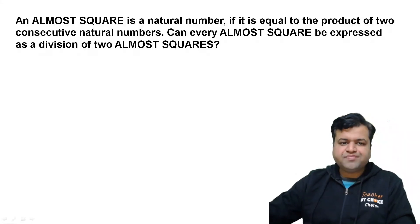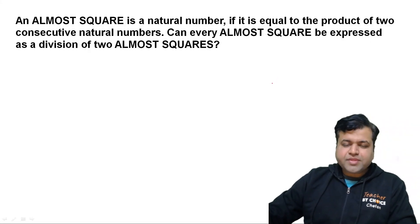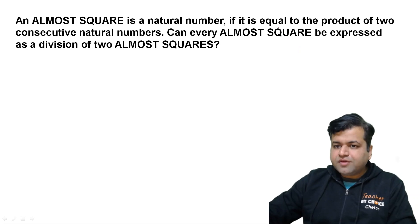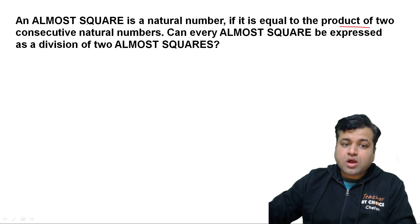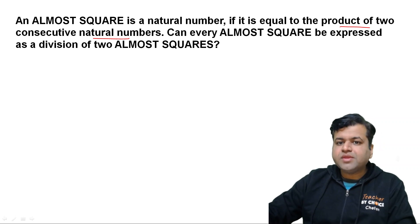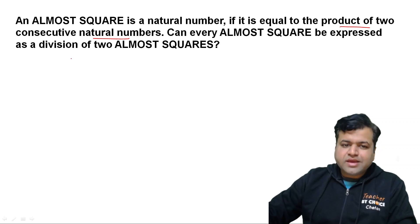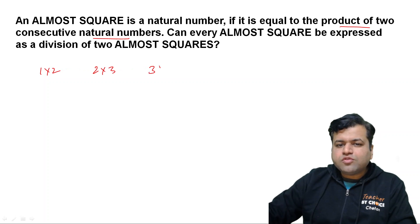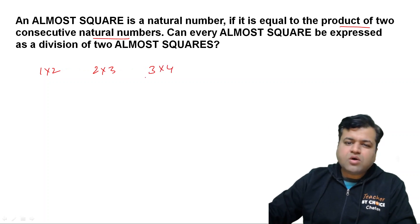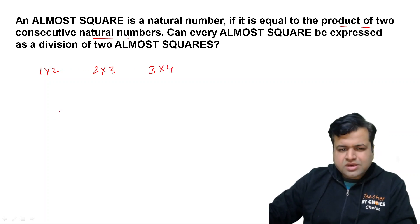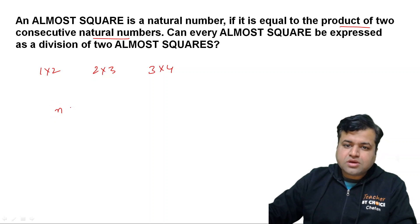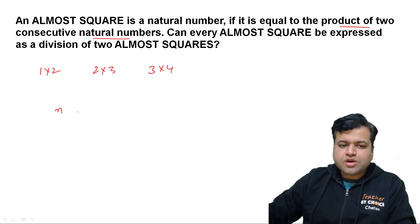Let's start with the question. The question says that an almost square is a natural number if it is equal to the product of two consecutive natural numbers — like 1×2, 2×3, 3×4. These are all almost squares. So in general, an almost square will be N×(N+1).